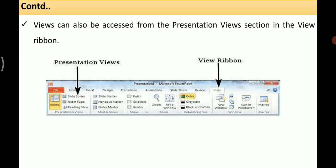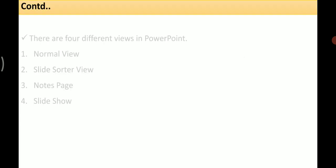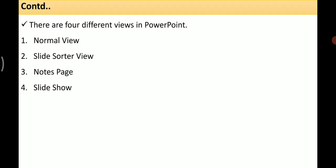The other way views can be accessed is from the Presentation Views section in the View ribbon. There are four different views in PowerPoint: the first is Normal view, second is Slide Sorter view, third is Notes Page, and the fourth is Slide Show.